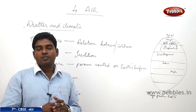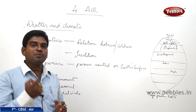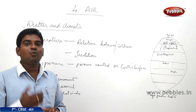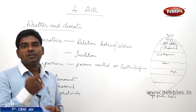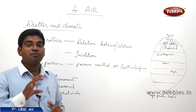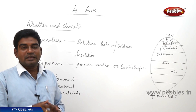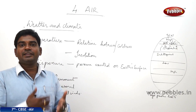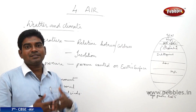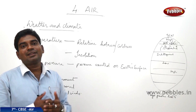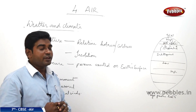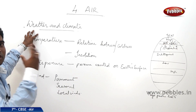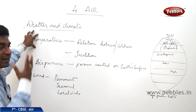So weather is the state of atmospheric condition for a very short period of time, while climate is the state of the atmospheric condition for a very long period of time. Generally, they study a place for 30 years to determine the climate of a place. Now moving into the details — what is temperature and how is it connected with the concept of air, weather and climate?